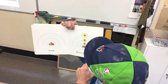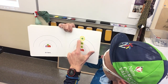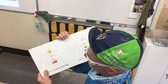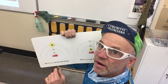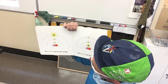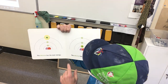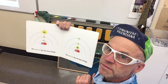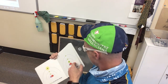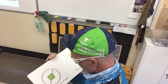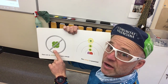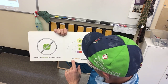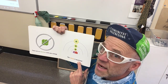All electrons have energy. This electron has the most energy. This electron has the least energy. There are no electrons with zero energy. This energy is quantized.